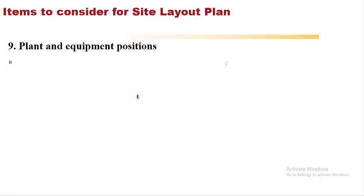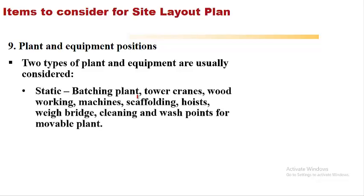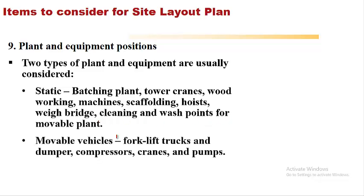Plant and equipment position: two types of plant and equipment are usually considered. First, static — that is, batch plant, tower cranes, woodworking machines, scaffolding, hoists, weigh bridge, and cleaning and wash points for movable plant. Second, movable vehicles include forklift, trucks and dumper, compressors, cranes and pumps, etc.